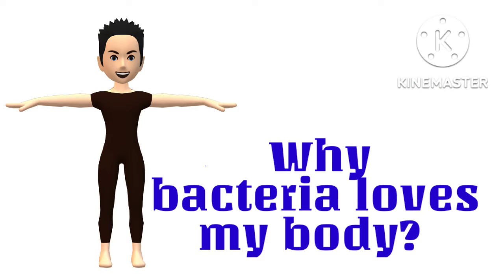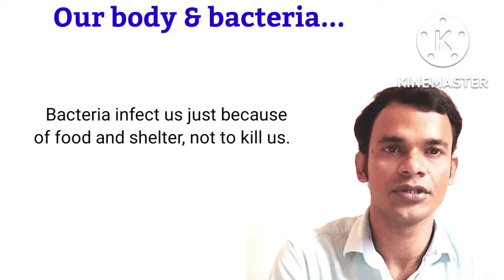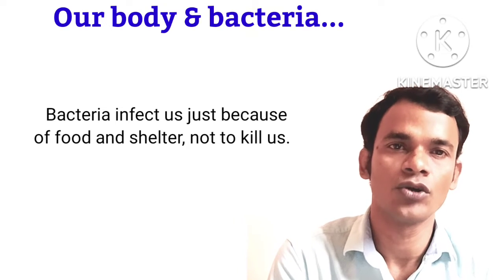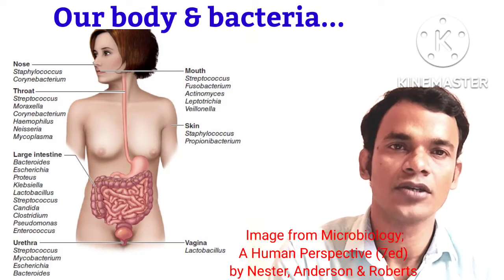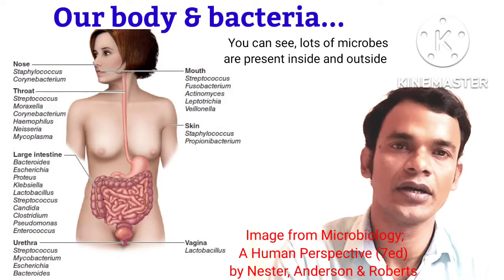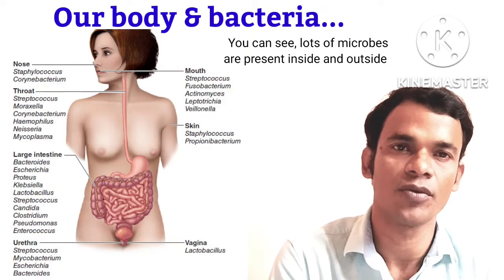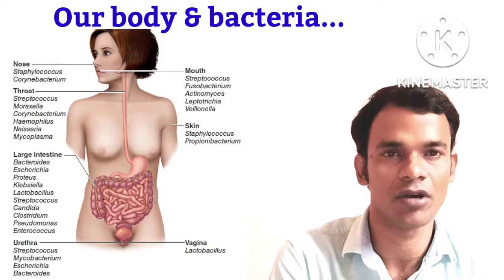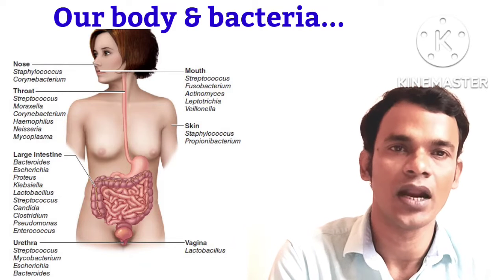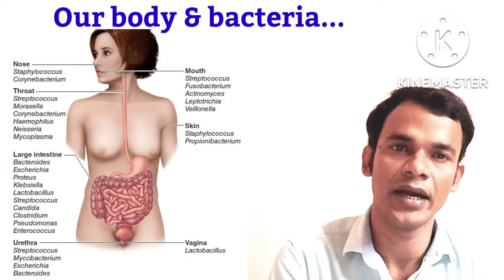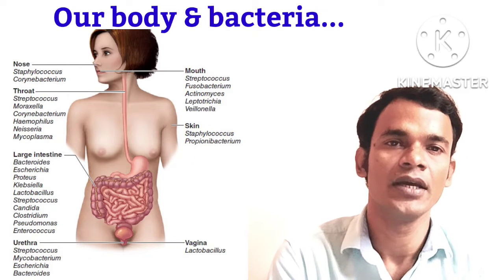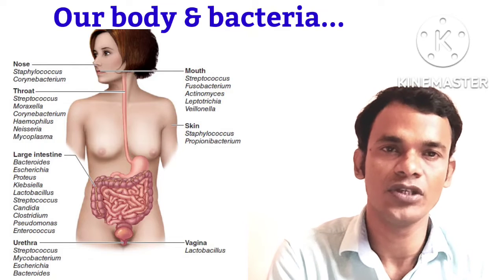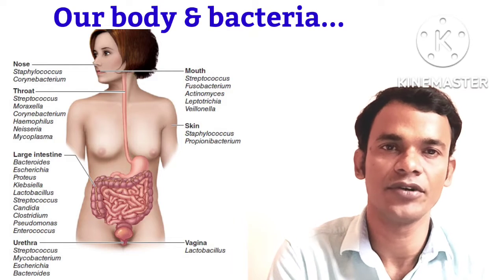The main objective of bacteria is to acquire nutrition and shelter for multiplication, not to kill the host. Different parts of our body exhibit different environmental conditions in terms of pH, temperature, nutrition, moisture, and oxygen availability. Our body itself provides an endless variety of microenvironments and niches, making it a suitable habitat for different microbes.